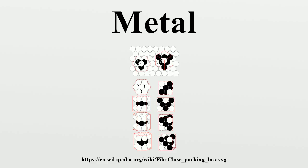About 91 of the 118 elements in the periodic table are metals; the others are non-metals or metalloids. Some elements appear in both metallic and non-metallic forms. Astrophysicists use the term 'metal' to collectively describe all elements other than hydrogen and helium. Thus, the metallicity of an object is the proportion of its matter made up of chemical elements other than hydrogen and helium.